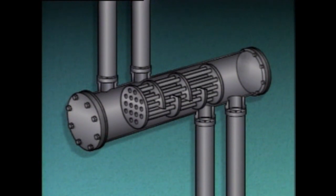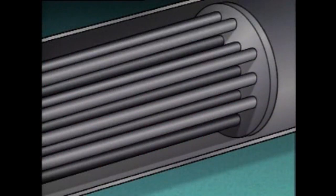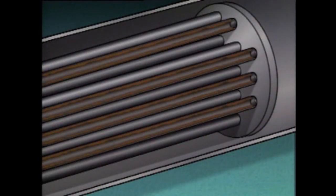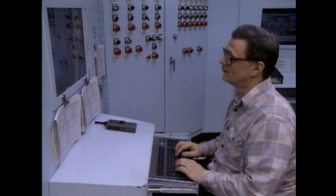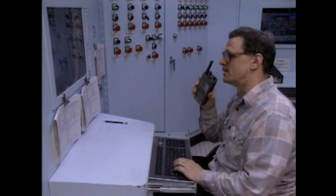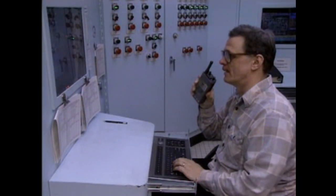For example, if the delta T across the tube side of a heat exchanger is supposed to be 10 degrees, but it is only 5 degrees, it could be an indication that the tubes in the unit are becoming fouled, or that one or both of the flow rates are not correct for proper operation. In any event, the cause of the problem should be investigated, and supervisory personnel should be informed.